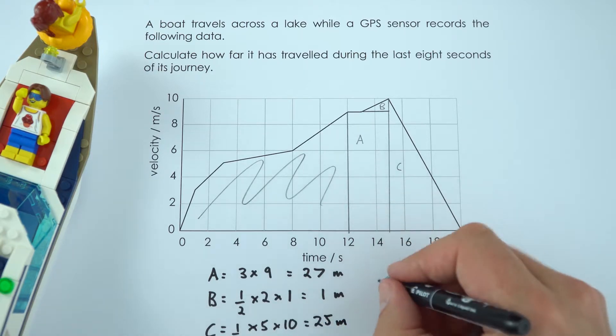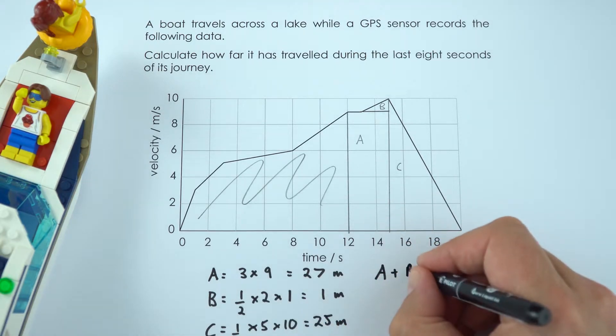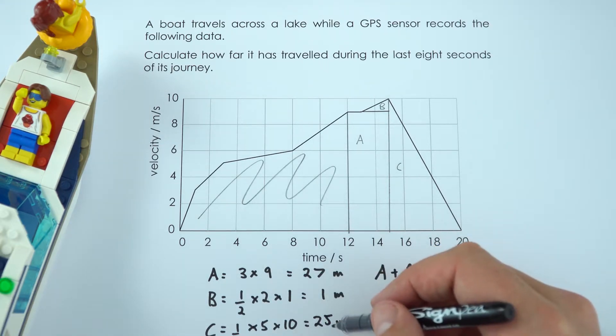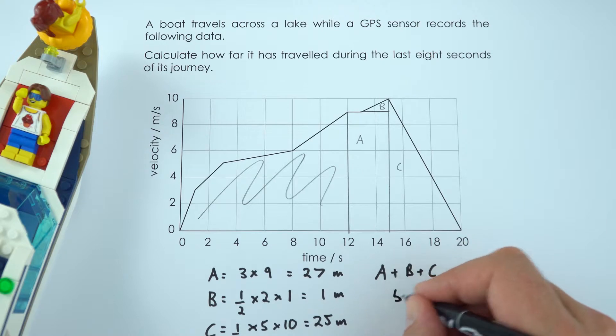Now to work out the total area that's just equal to A plus B plus C and if we do 27 plus 1 plus 25 that gives a total distance equal to 53 meters.